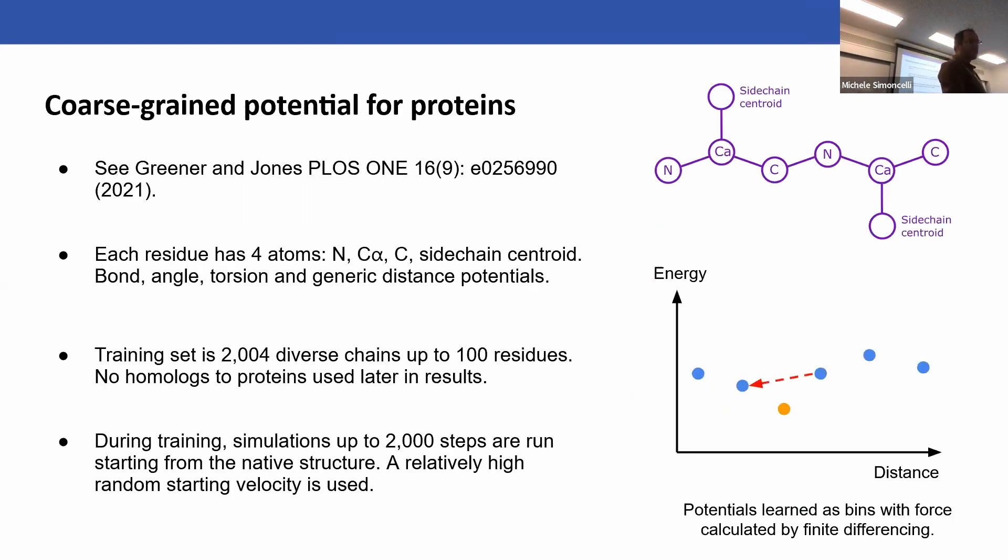Before I came here at UCL, I did this work to learn a coarse-grained potential. You can read more about it in this paper. Basically, each residue in the protein has four atoms, and there's a relatively standard series of potentials: bond potential, angle, torsion, and generic distance potential.